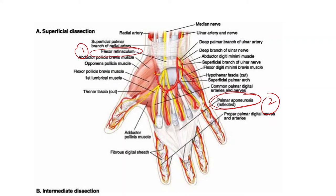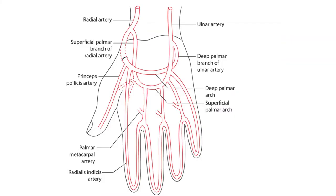Moving on to the formation of the palmar arch. The superficial palmar arch is mainly the continuation of the ulnar artery itself. The ulnar artery, once it enters the palm, divides into two branches — the superficial branch and the deep branch. The superficial branch of the ulnar artery is the continuation of the main artery itself, while a small branch forms the deep branch.